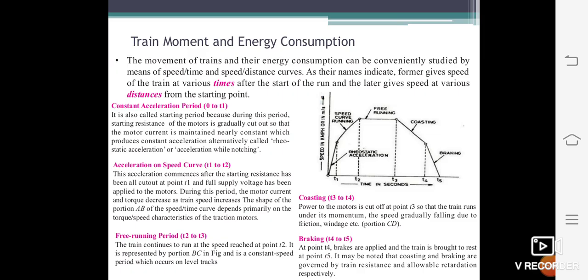For the starting condition, we can consider that 0 to T1 is called the constant acceleration period, with rapid speed increase. Then T1 to T2 is the speed voltage running period with acceleration on the speed curve. T2 to T3 is called the free running period, meaning constant train speed. T3 to T4 is coasting, where they reduce their speed gradually. And the last one, T4 to T5, is called the braking system.